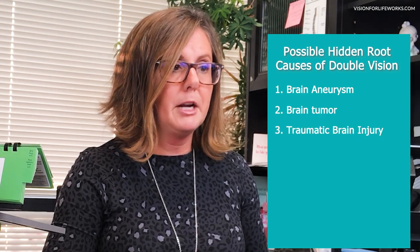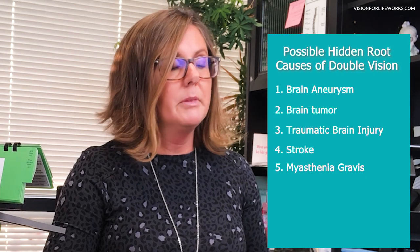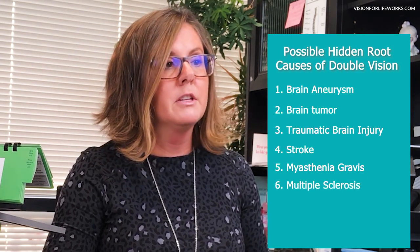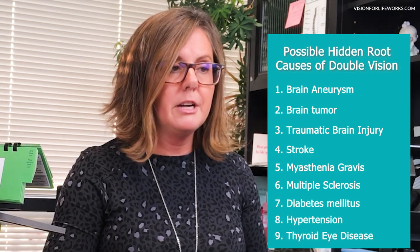Double vision can also come from a more serious root cause. It's important to have the root cause identified to know why you've gotten double vision to begin with. These conditions include brain aneurysm, brain tumor, traumatic brain injury, stroke, myasthenia gravis, multiple sclerosis, diabetes, hypertension, and thyroid eye disease. Rooting out the cause might involve blood tests, MRIs, and CAT scans — it's essential to get the proper diagnosis so we can treat it accurately.